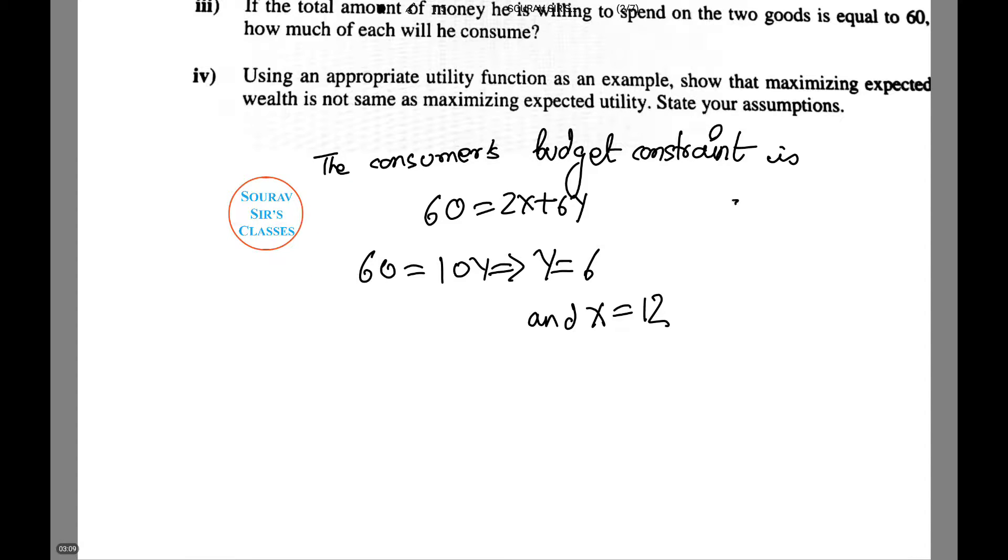This we obtained from question 2, where we got the relation X equals 2Y. Now for the fourth part, using an appropriate utility function as an example, we need to show that maximizing expected wealth is not the same as maximizing expected utility. We need to state our assumptions as well.